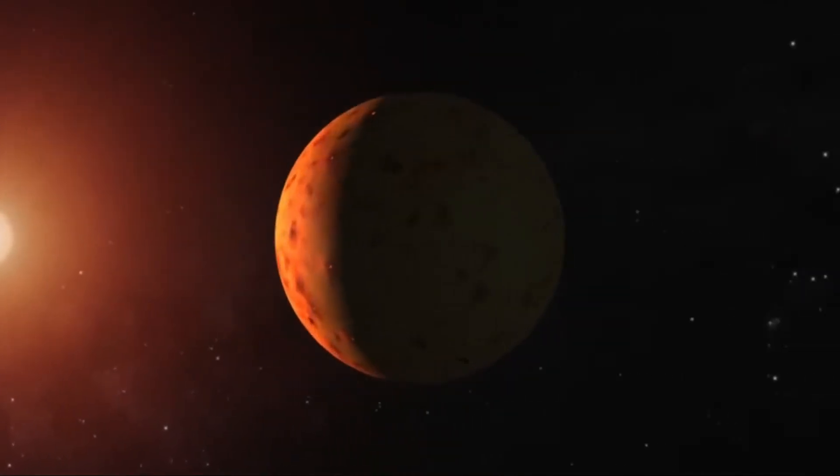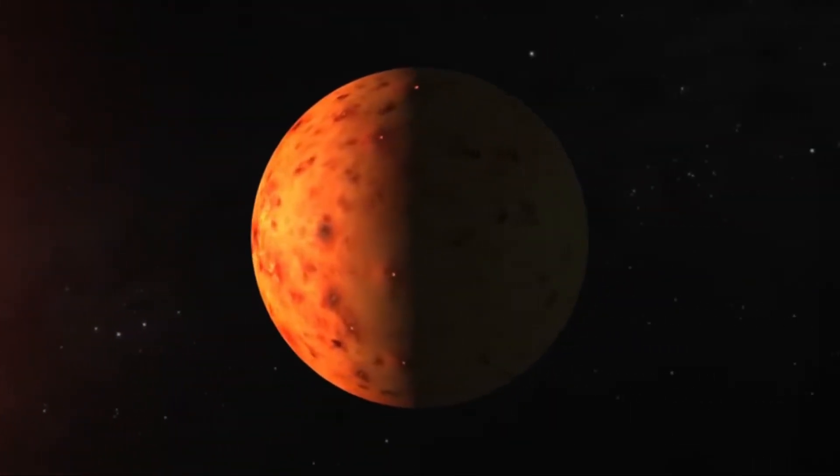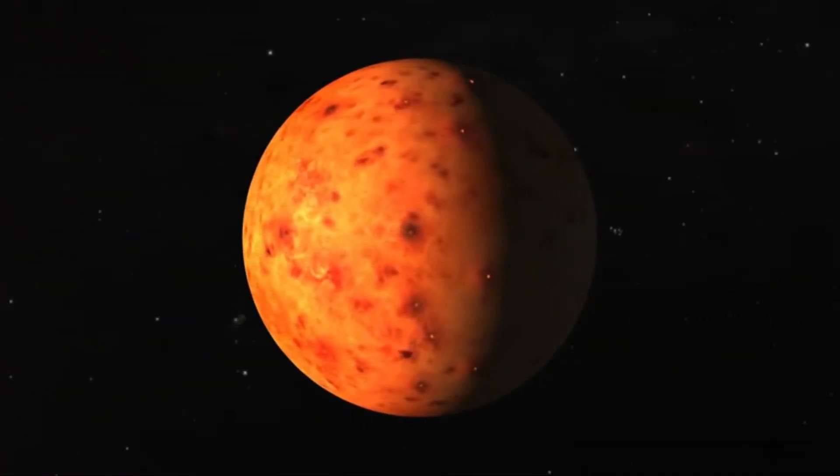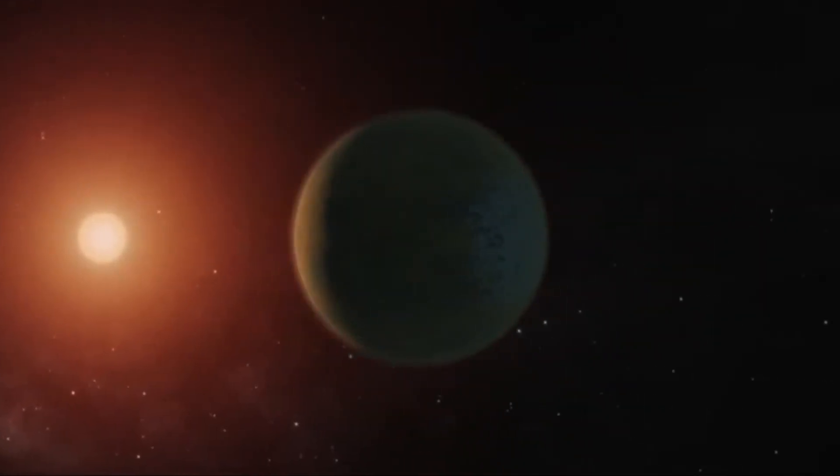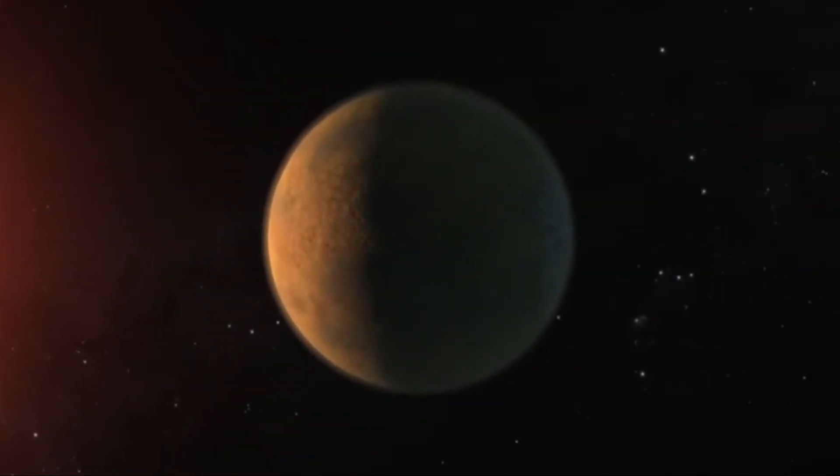TRAPPIST-1 is an ultra-cool red dwarf star that is slightly larger but much more massive than the planet Jupiter. It is located 39.6 light-years from the Sun in the constellation Aquarius.